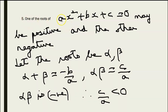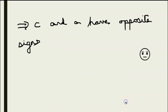Find the condition that one of the roots of ax² + bx + c = 0 may be positive and the other negative. So let the roots be alpha and beta. So alpha + beta = -b/a and alpha × beta = c/a. Since one root is positive and one is negative, alpha × beta is negative. So c/a < 0, meaning c and a have opposite signs.